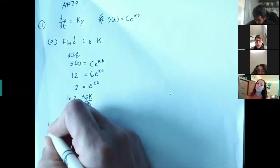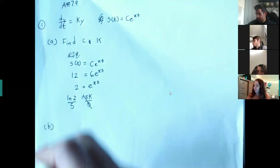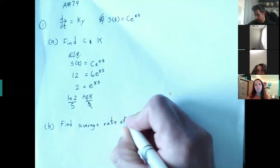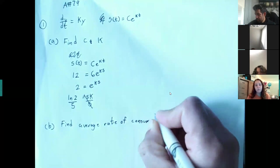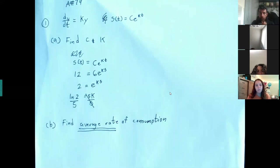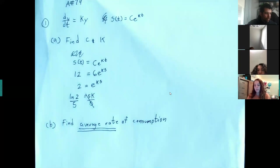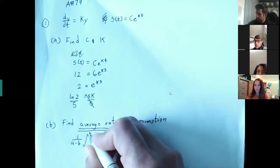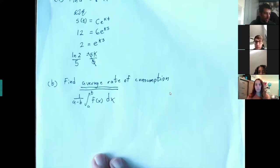Most of you pretty much got that. Now Part B says to find the average rate of consumption. The key word there is 'average rate.' You guys should know what that means. Every time you see the word average, I'm talking about this formula — the generic average value formula you should remember.